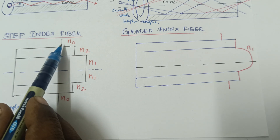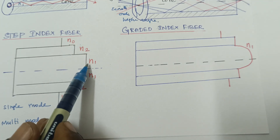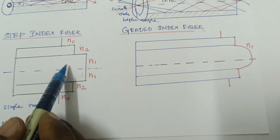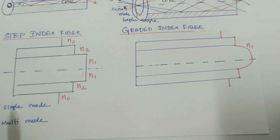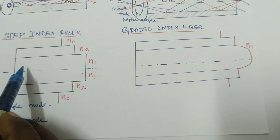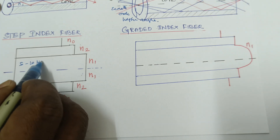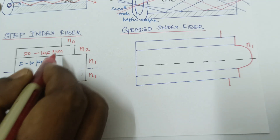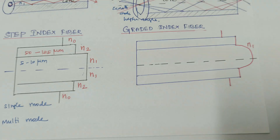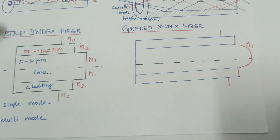In step index fiber, the refractive index of free space is n0, the refractive index of cladding is n2, and the refractive index of core is n1. The refractive index of core is high compared to the cladding. The diameter of the core is 5 to 10 micrometers, and the diameter of the cladding is 50 to 125 micrometers. The core has a high refractive index compared to the cladding.